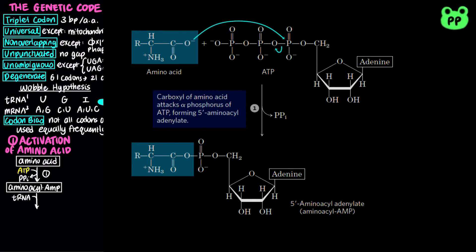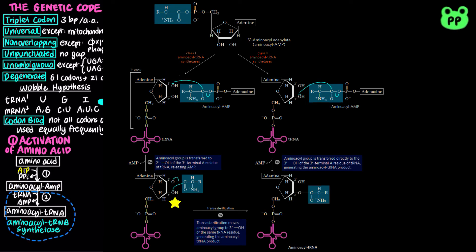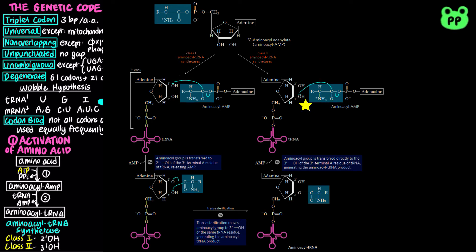The mechanism of the second step is different for two classes of aminoacyl tRNA synthetase. For class 1 enzymes, the 2' hydroxyl group of the 3' terminal A residue of tRNA acts as a nucleophile, attacking the carbonyl of aminoacyl AMP, releasing AMP. The aminoacyl group is then transferred to the 3' hydroxyl group by a transesterification reaction. For class 2 enzymes, the aminoacyl group is transferred directly to the 3' hydroxyl group of the terminal adenylate of tRNA.